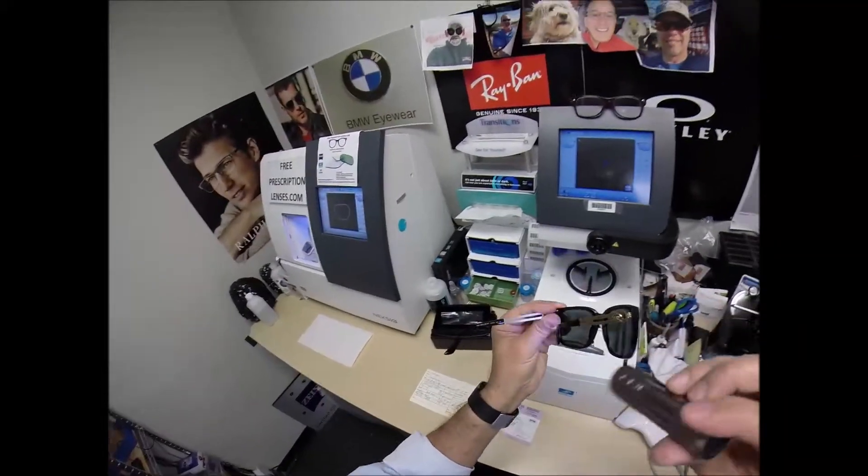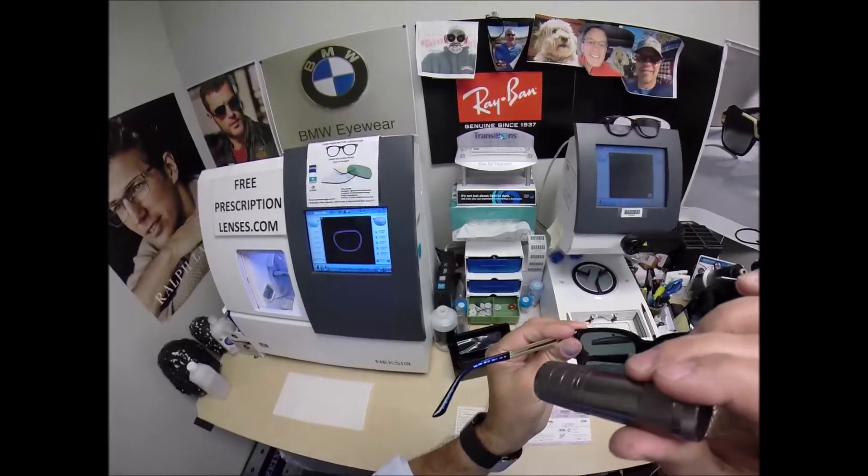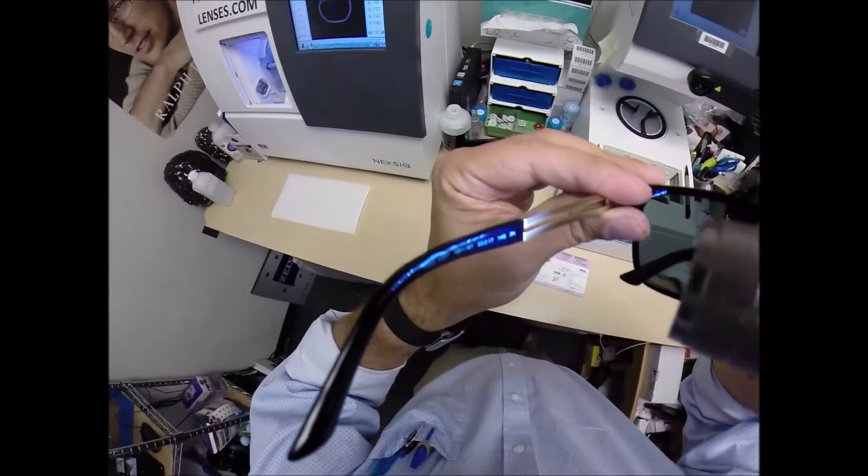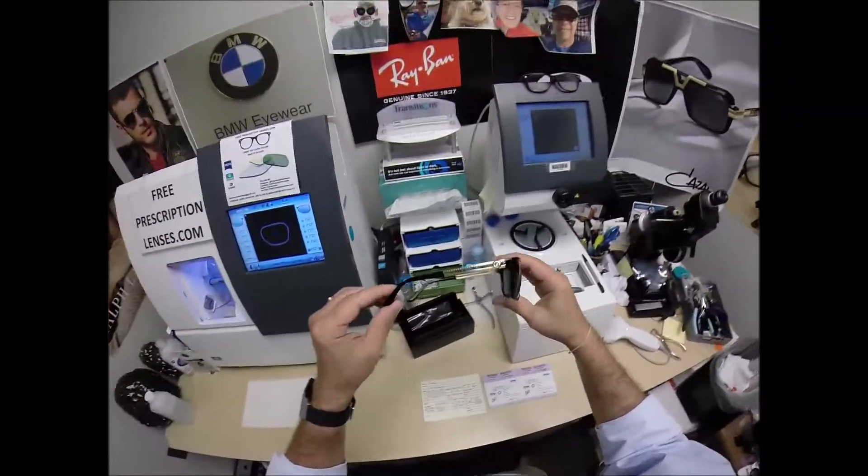This, again, is the model number 4307, color GB1, the classic shiny black, 58 eye size, 17 bridge, and 145 temple length.